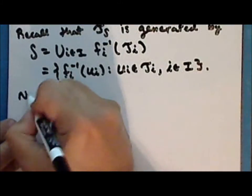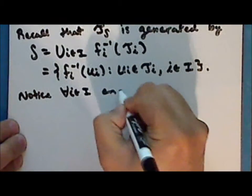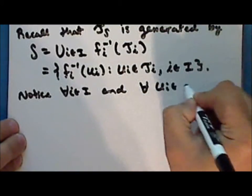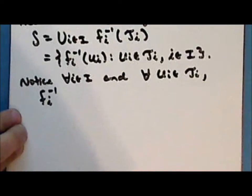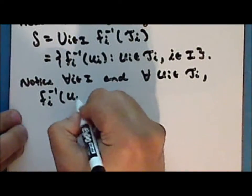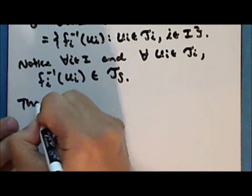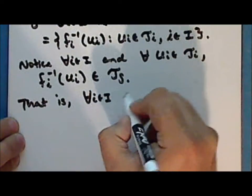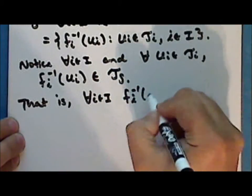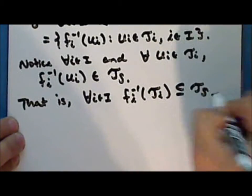This is the set of all inverse images under the maps f sub i of sets u sub i, where u sub i is in the topology tau sub i and i is in the indexing set I. Notice that for every set u sub i in the topology tau sub i, the inverse image under the map f sub i of the set u sub i is in the initial topology — that is, for every index i, the inverse image under f sub i of the topology tau sub i is a subset of the initial topology.